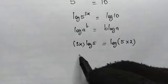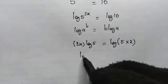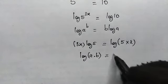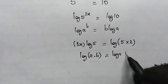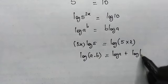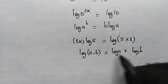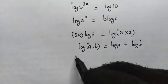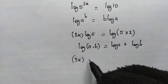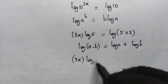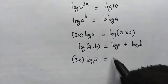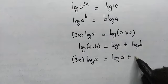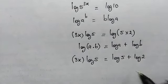We know this logarithmic law: log of a multiplied by b is equal to log of a plus log of b. We can apply it to the right hand side. So the left hand side is still 3x times log of 5, and this will be equal to log of 5 plus log of 2.